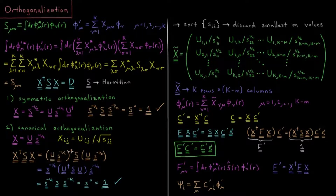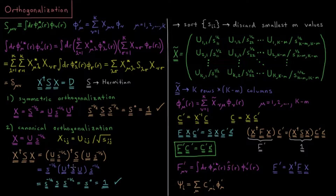Specifically, (US^{-1/2})† S (US^{-1/2}) equals S^{-1/2}† U† S U S^{-1/2}. Since S^{-1/2} is diagonal, its adjoint is itself, so we drop the dagger on it. We keep U†, and then U†SU is just the diagonalization of S, giving us the diagonal representation s. So we have s^{-1/2} times s times s^{-1/2}, which equals s to the zero — an identity matrix.